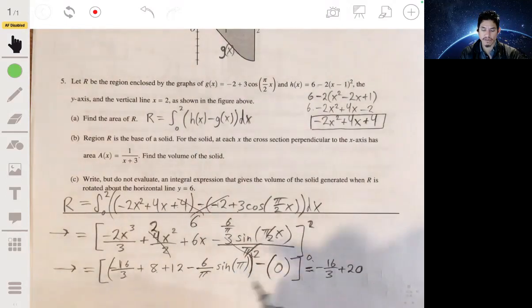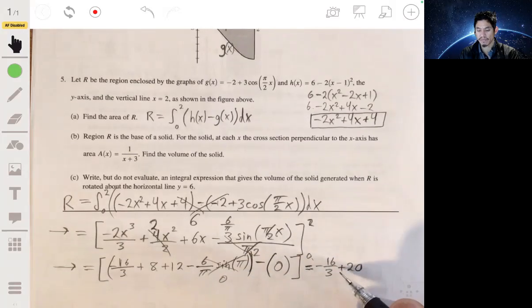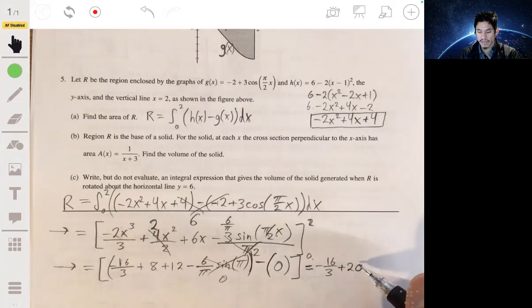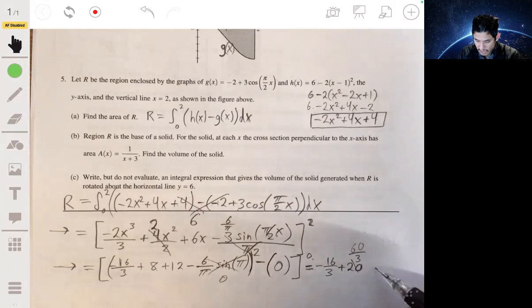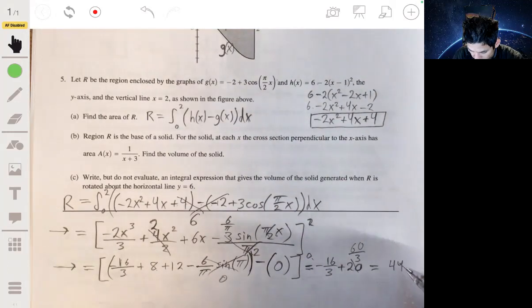And sine of π is 0, so this falls away, that doesn't matter, so it's just negative 16 over 3 plus 20. Combining fractions, this is like 60 over 3, and it'll just be 44 over 3.